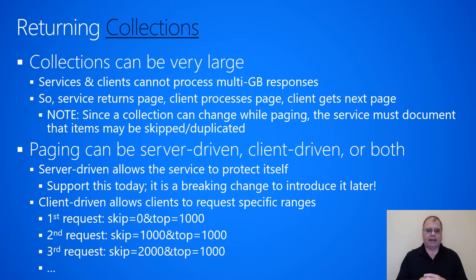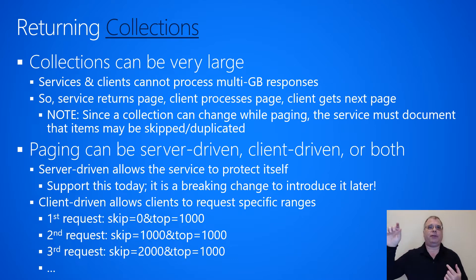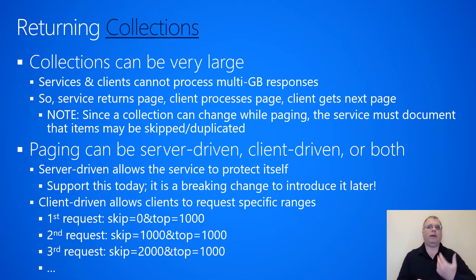Client-driven paging allows the client to request specific ranges of a collection. For example, a client that wants to process 1,000 items at a time might make a first request saying: skip the first zero items — meaning don't skip any — and return the top 1,000 items in that collection.